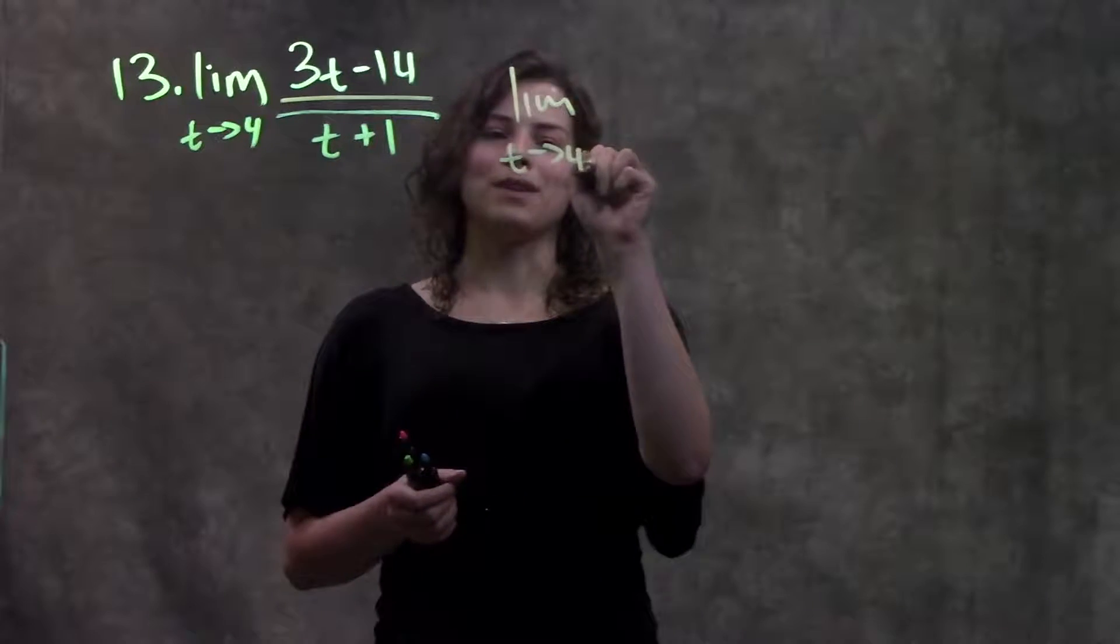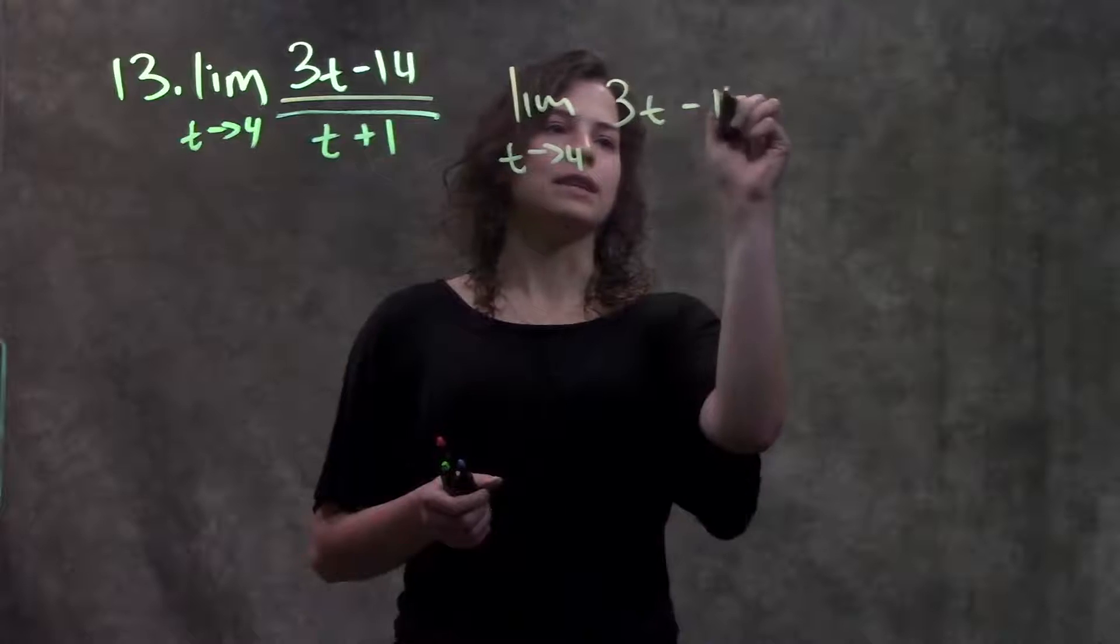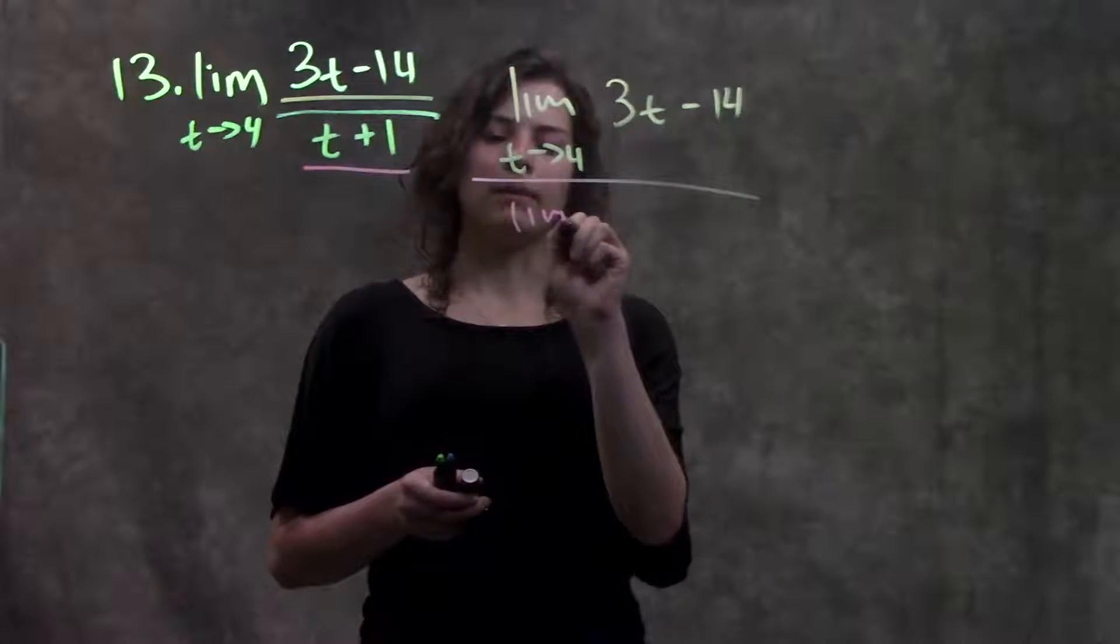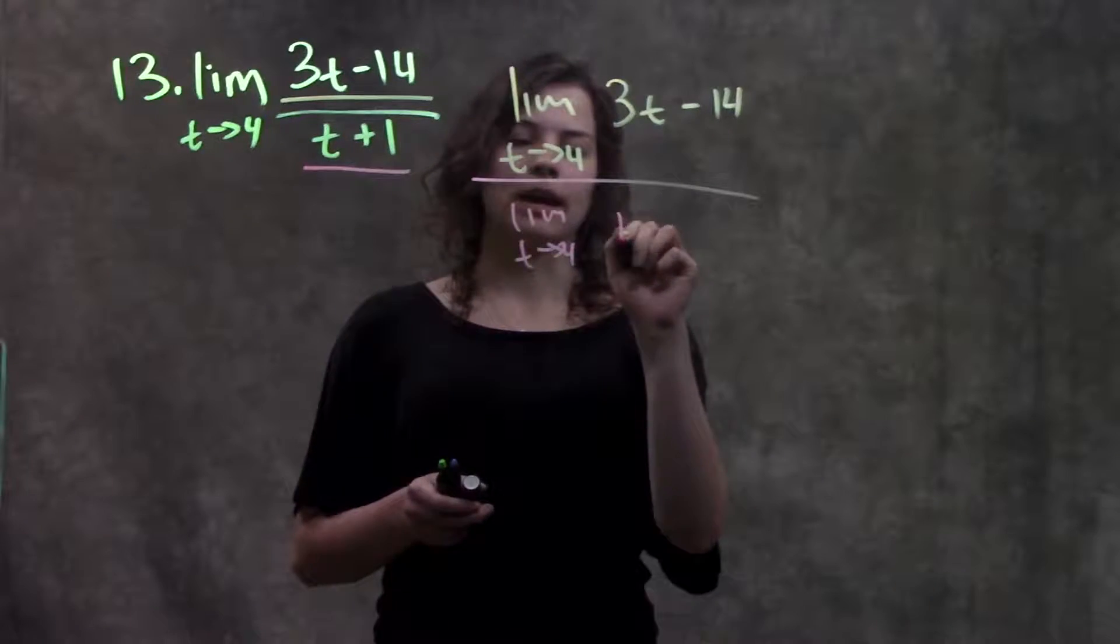So on the top, I'm left with limit as t approaches 4 of the entire numerator and I'm dividing that by the limit as t approaches 4 of the entire denominator.